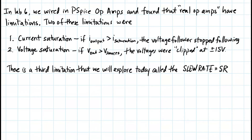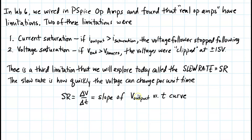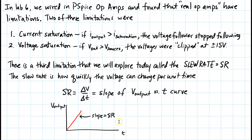There is a third limitation we will explore today called the slew rate, typically written SR. The slew rate is how quickly the voltage can change per unit time, written as SR equals the change in voltage over a change in time. So the slew rate is the slope of the V-out versus time curve. Pictured, if I plot V-output versus time, the slew rate is the slope of that output.